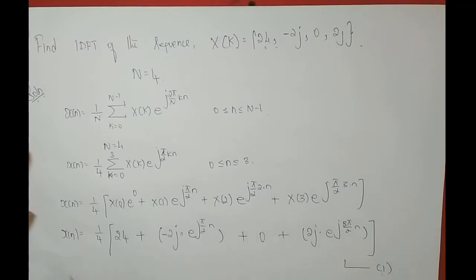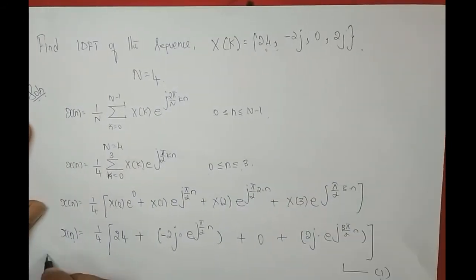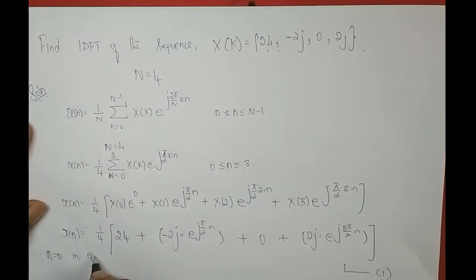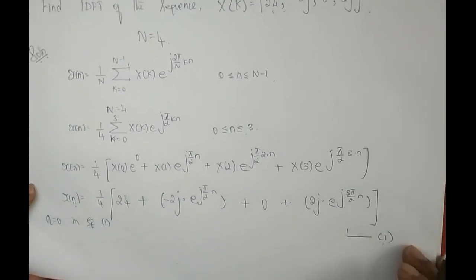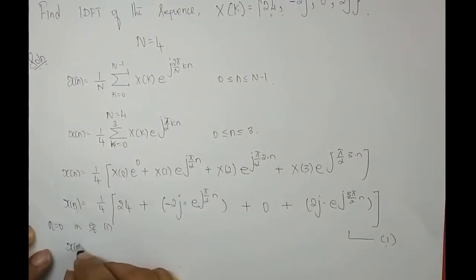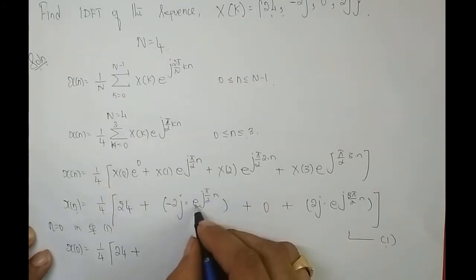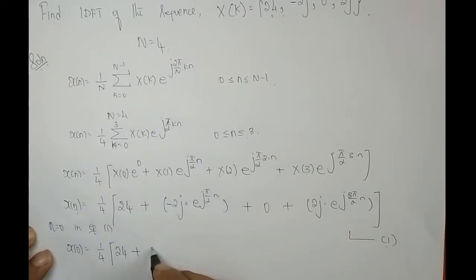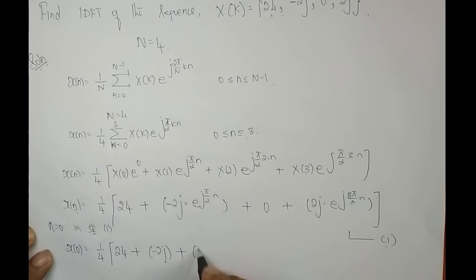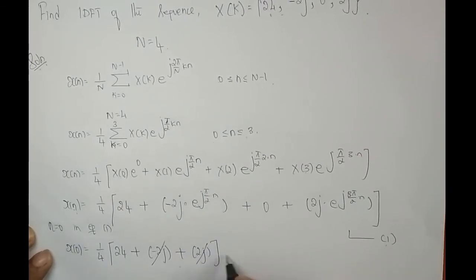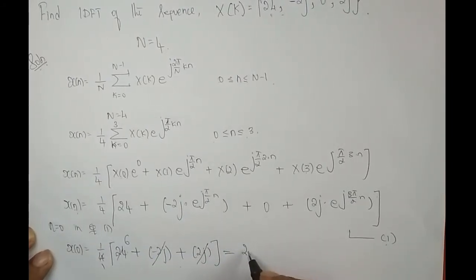Substituting n = 0 in Equation 1: x[0] = 1/4 × [24 + (−2j)·e^0 + 2j·e^0] = 1/4 × [24 + (−2j) + 2j]. The −2j and +2j cancel out, leaving 24/4 = 6. So x[0] = 6.